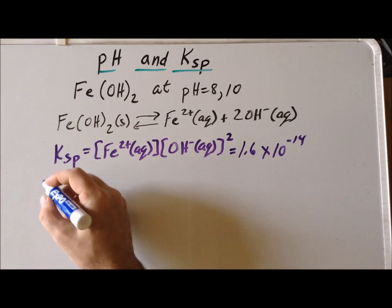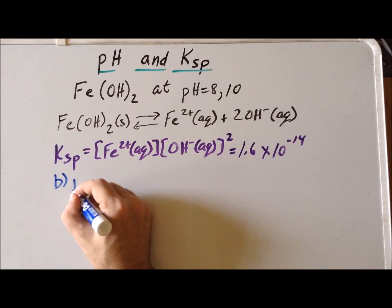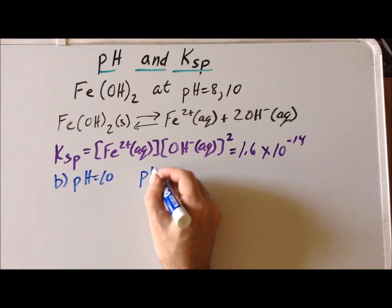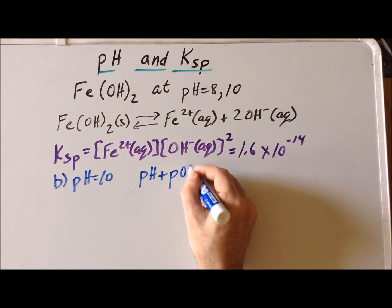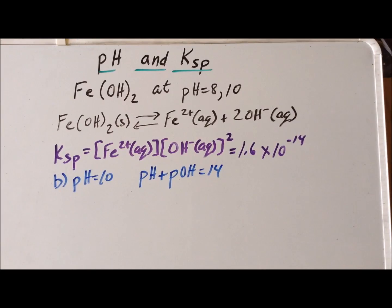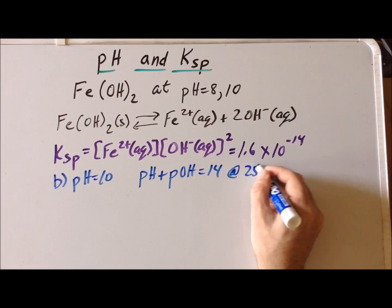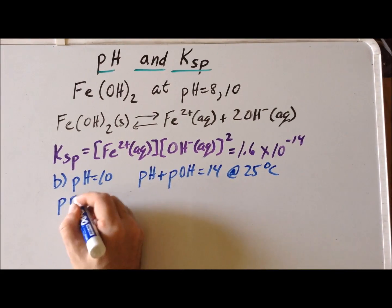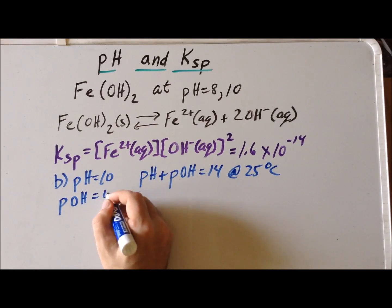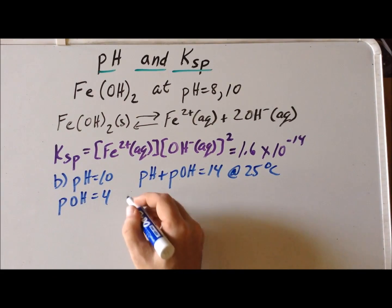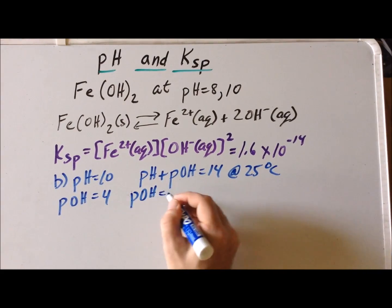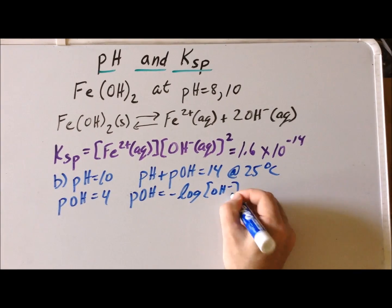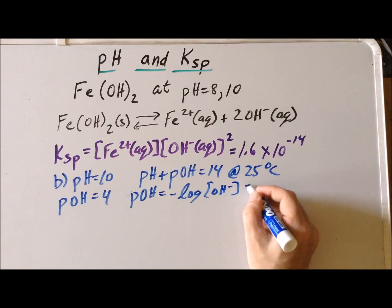Next, we look at the situation when the pH is equal to 10. Again, pH + pOH = 14 at 25°C. Therefore, we can see immediately that pOH = 4. So recall that pOH is the negative log of the concentration of hydroxide ion, and this is equal to 4.